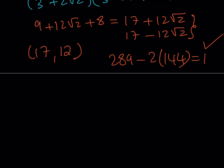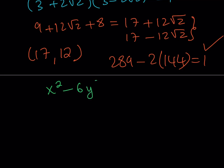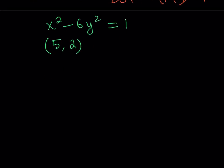Let me give you another example: x squared minus 6y squared equals 1. There is a way to find solutions using continued fractions, but it's not always hard to guess, especially when the numbers are small. Have you noticed that 25 minus 24 equals 1? And 25 is a perfect square, while 24 equals 6 times 4, which is 6 times a perfect square. So (5, 2) is a solution to this equation — guess and check works.